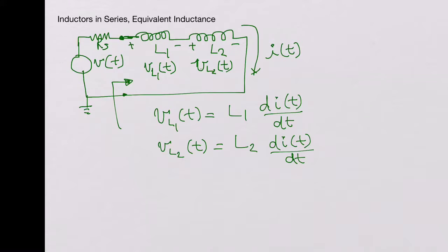So now if you add these two, the total voltage dropped across points A and B is the total voltage VL1 of t plus VL2 of t, which is the total voltage dropped across VL equivalent of t.